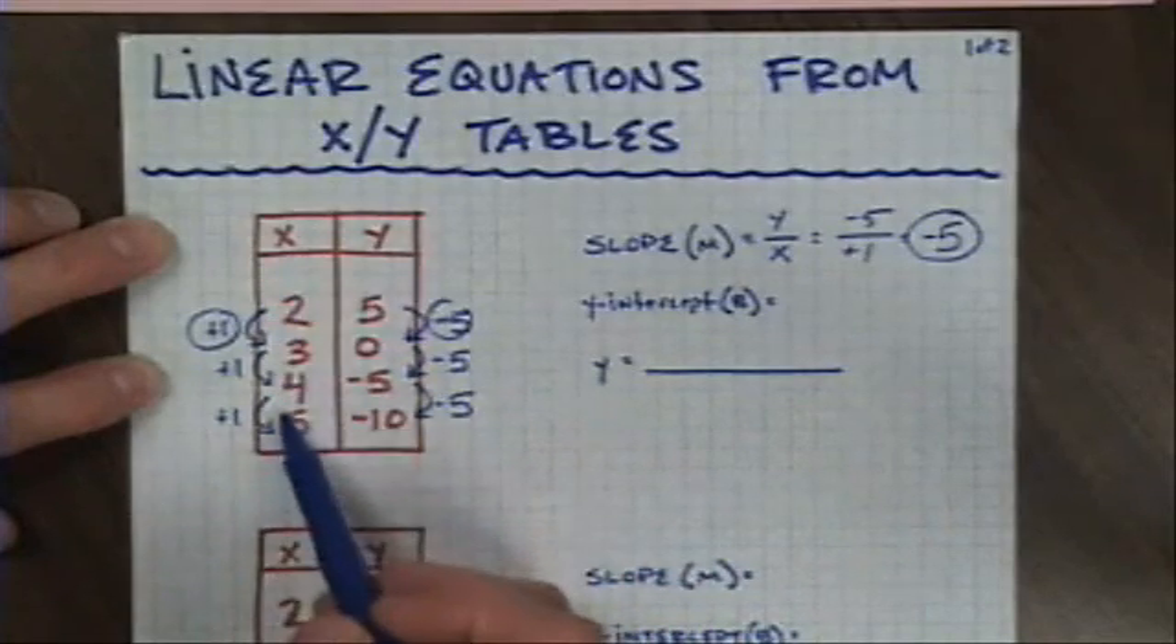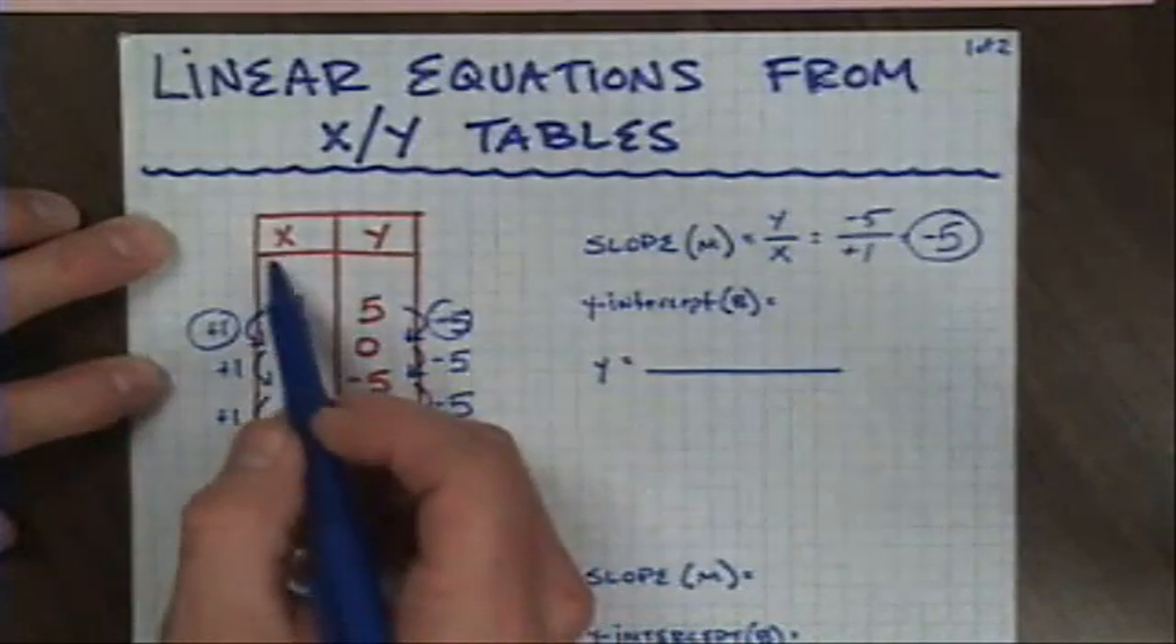As for my y-intercept, we've seen this before. If I simply find a, well if I had a 0 in the x column, whatever was across from it would be my y-intercept. I don't seem to have that here. But I do have a pattern.